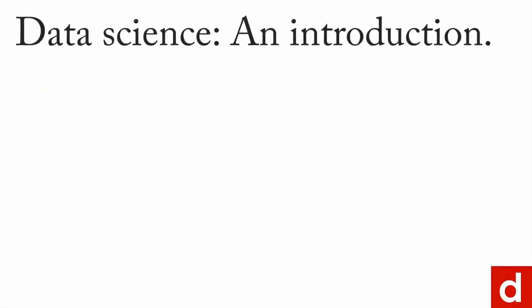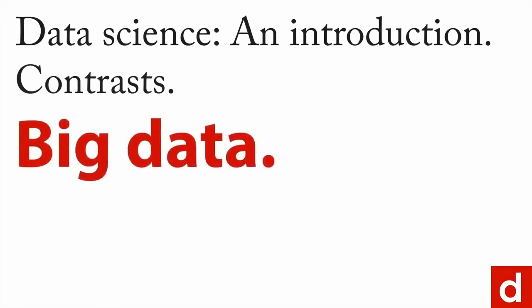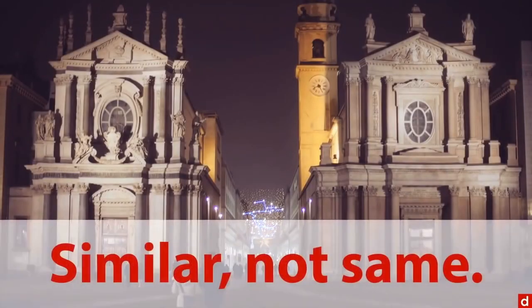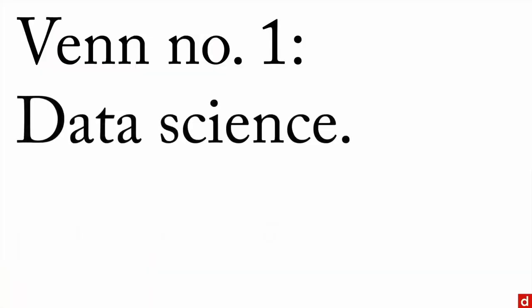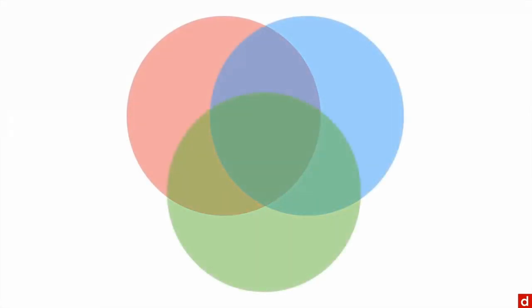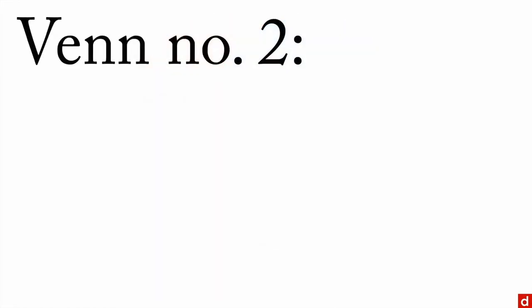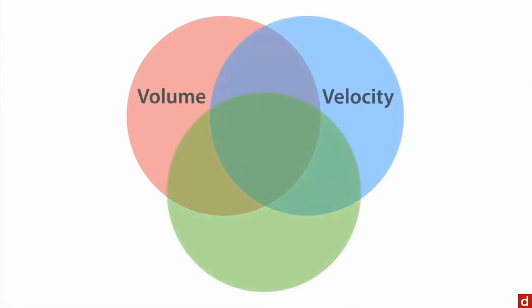To better understand data science, it helps to look at contrasts with other fields. Probably the most informative is with big data, because these two terms are often confused. Data science and big data both have Venn diagrams: the data science Venn has coding, math, and domain expertise. The big data Venn has high volume, rapid velocity, and extreme variety — the three V's. Take those three together and you get big data.